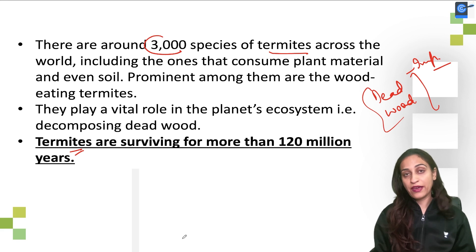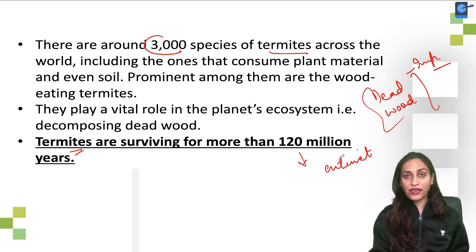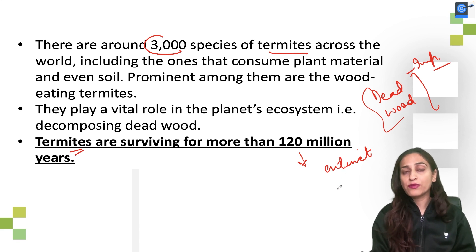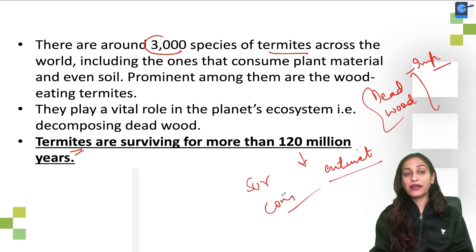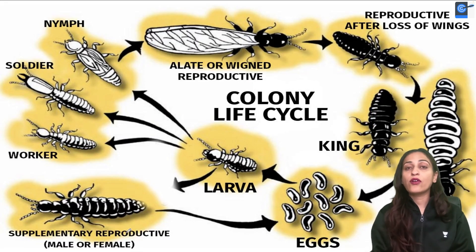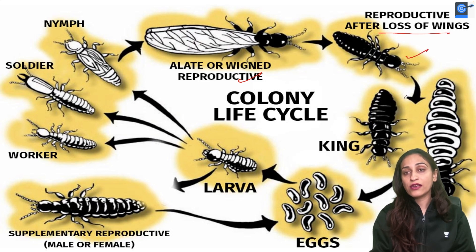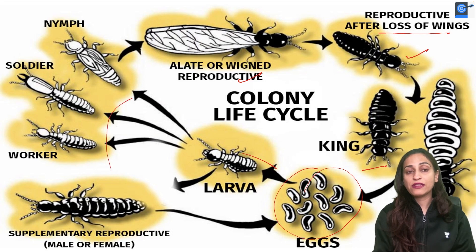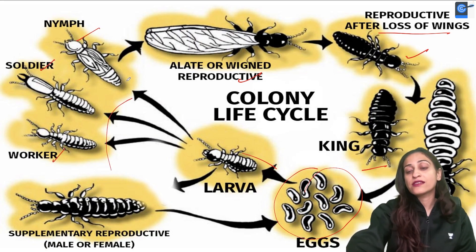Many species are going extinct because they can't survive competition. But termites still have a reproductive cycle — king, queen (bigger in size), egg, larva, worker, soldier, and nymph — this cycle continues.